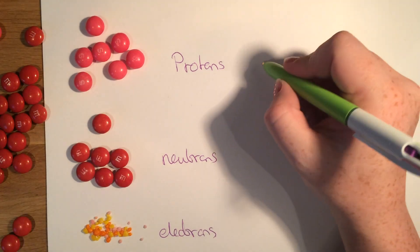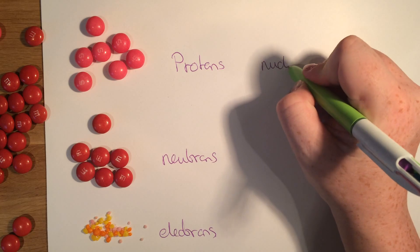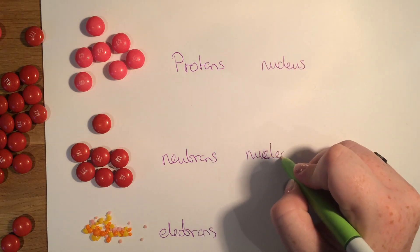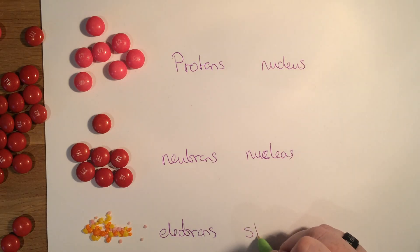Now these are all found in different places. The protons are in the nucleus, as are the neutrons. And the electrons are flying around the outside in shells.